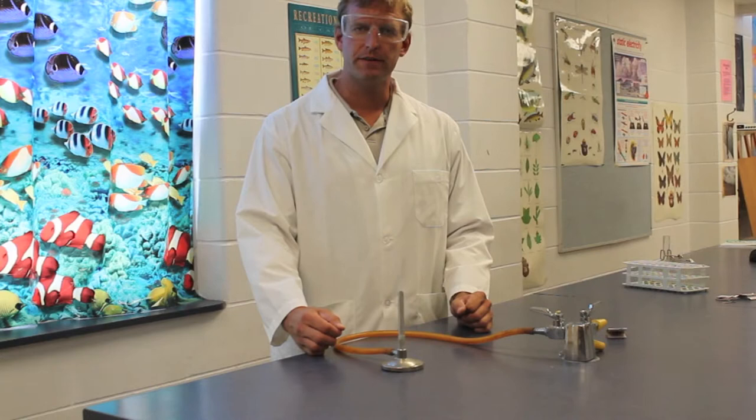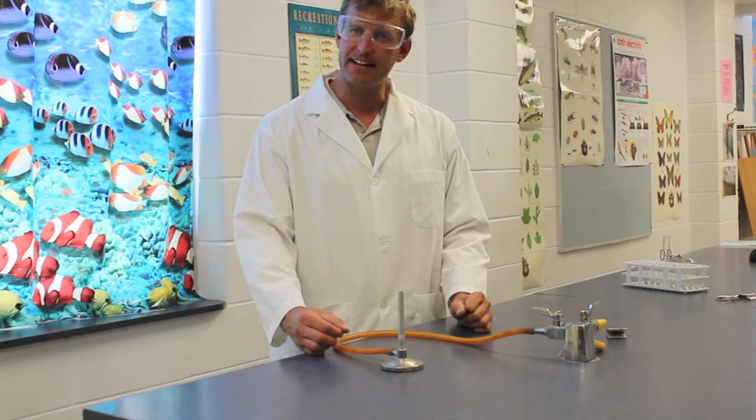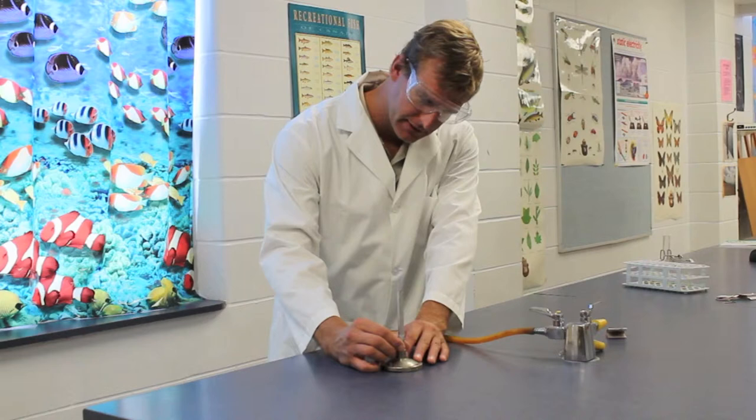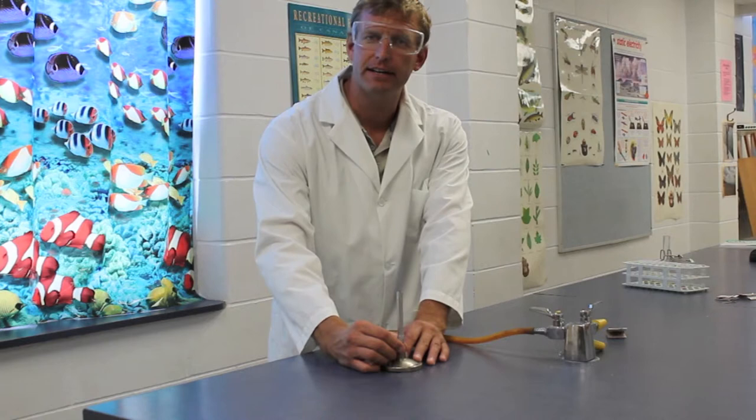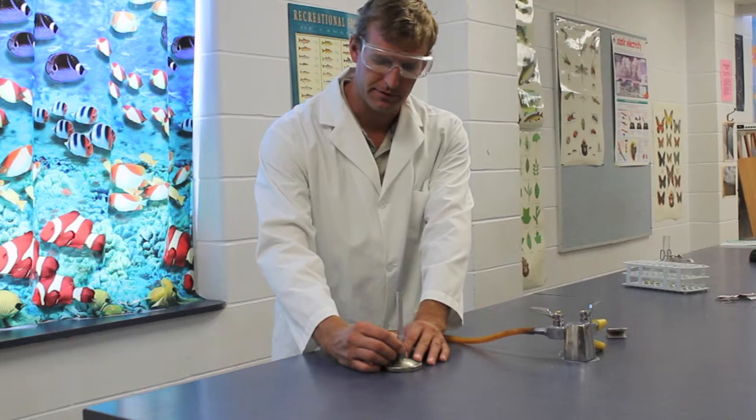Because one of the features of the Bunsen burner is being able to regulate how much the air-gas mixture is, we can turn this collar so that more air is allowed to mix with the gas, creating a hotter flame. There are different situations in the science laboratory that you need a hotter flame or a cooler flame.